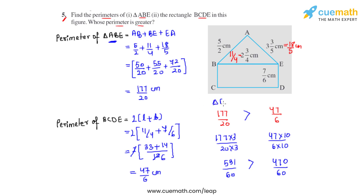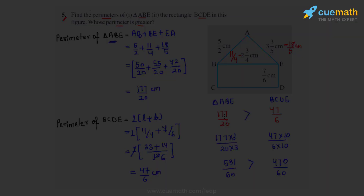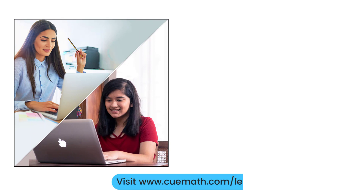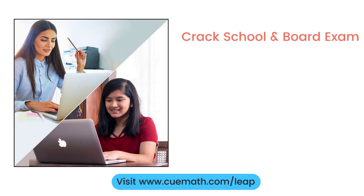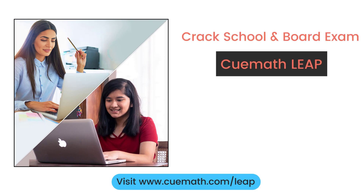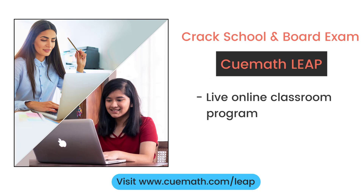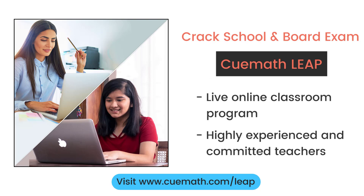So the perimeter of triangle ABE is greater than the perimeter of rectangle BCDE. To learn more about how QMath can help you crack school and board exams, explore QMath Leap, a live online classroom program run by highly experienced and committed teachers.